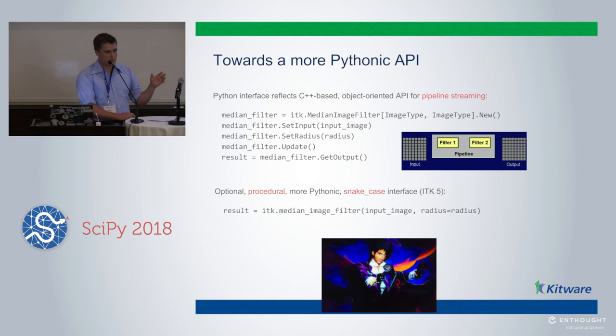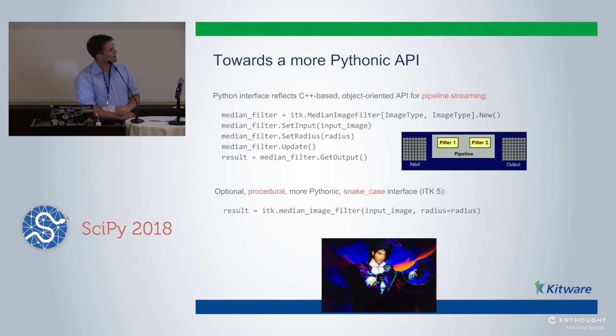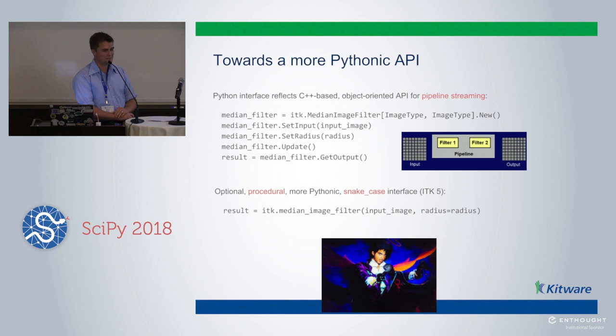Going forward, what's happening is that ITK is written in C++, and so the Python API in some ways reflects that C++ API, which is useful in some contexts. The pipeline is capable of streaming in many contexts so you can handle very large images, but it results in you setting up a pipeline and then running the pipeline at the end, which can be verbose. The new things coming are a more procedural, Pythonic API — using snake case — and you can just do it in one line, which is nice. As Ralf said in the keynote this morning, the goal is a nice API you can do in one line.